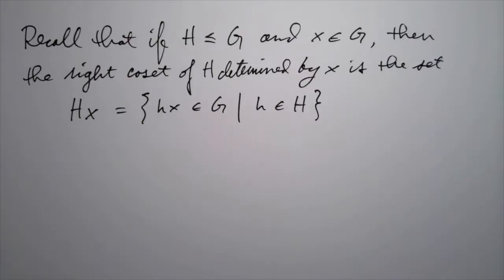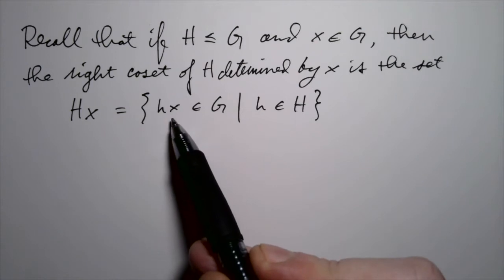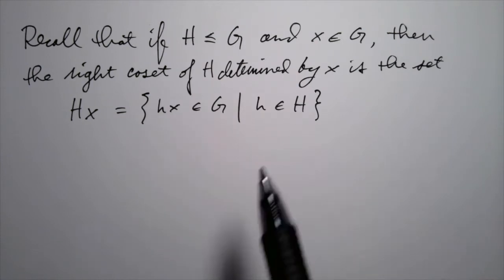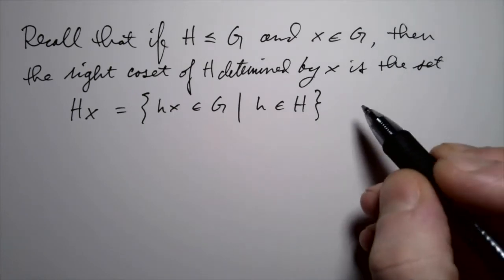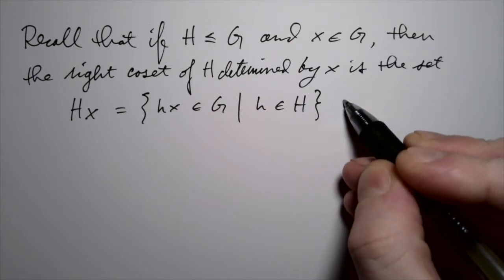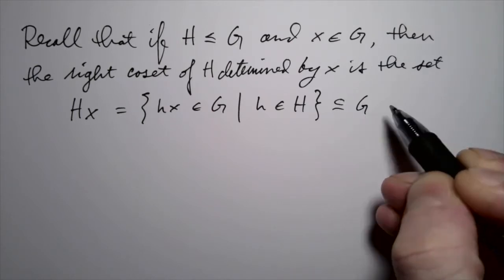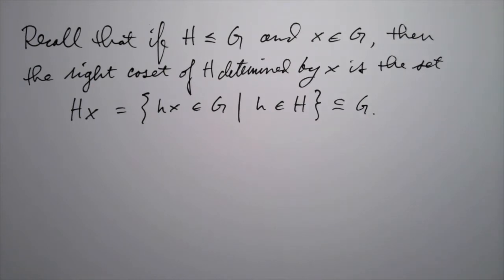Recall that if H is a subgroup of G, and X is an element of G, then the right coset of H determined by X is the following set. We write H then X, and it's exactly the set of elements in G of the form h times X, where little h is running through the subgroup H. So this is a subset of G, but it's not necessarily a subgroup. In fact, it'll only be a subgroup when the element X is in the subgroup H.